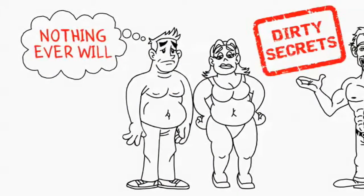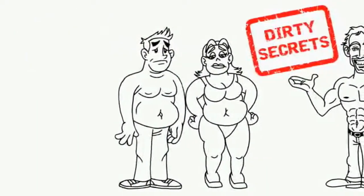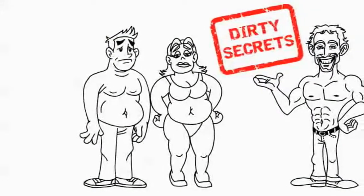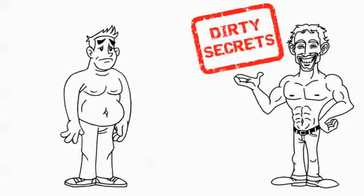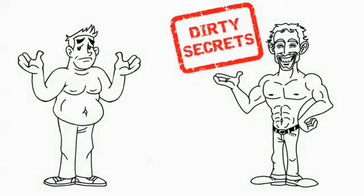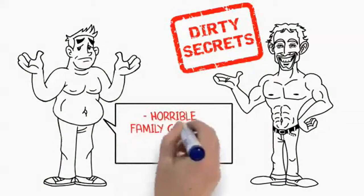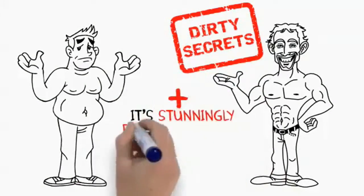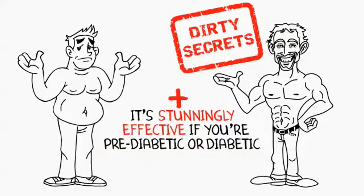In fact, it works better the more out of shape you are and the older you are. If you're well past 30 years old, then you need to pay close attention. The best part is it works for people who've tried a lot of other diets and failed, or if you have horrible family genetics and a slow metabolism, like I do. Plus, it's stunningly effective if you're pre-diabetic or diabetic. In some cases, it can even help you cure type 2 diabetes if you follow it exactly as I'll prescribe.